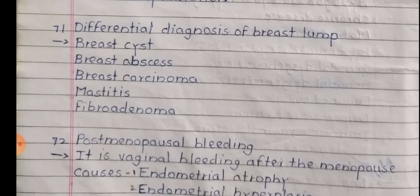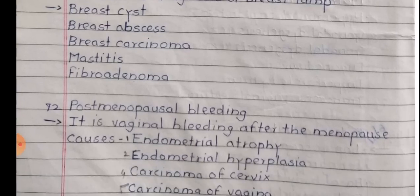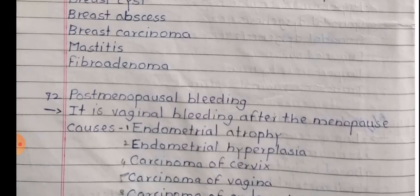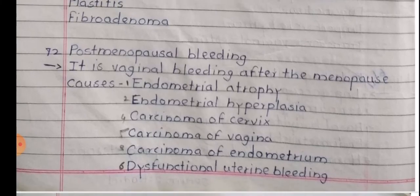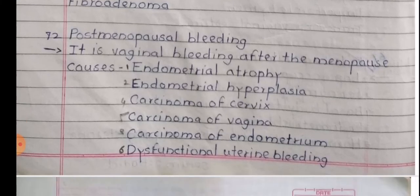Postmenopausal bleeding. It is vaginal bleeding after menopause. Causes include endometrial atrophy, endometrial hyperplasia, carcinoma of the cervix, carcinoma of the vagina, carcinoma of the endometrium, and dysfunctional uterine bleeding.